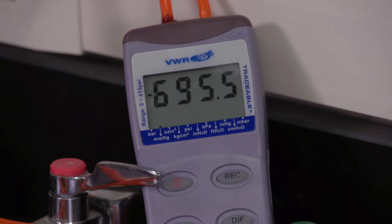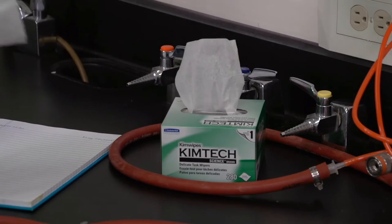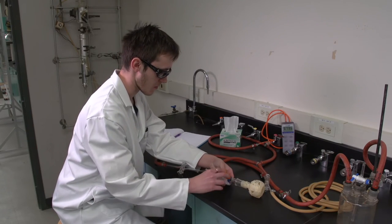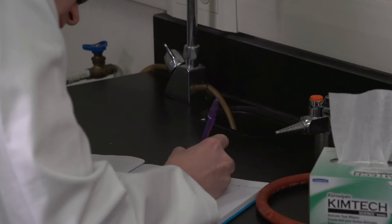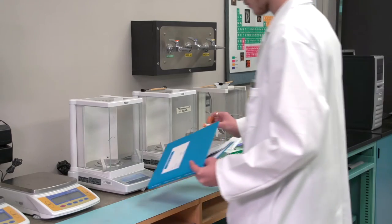Note the manometer reading and immediately close the 2 stopcocks that lead to the sample bottle. Write down the pressure reading. Remove the closed sample bottle from the system and determine its mass on the balance.